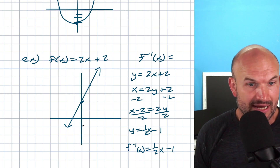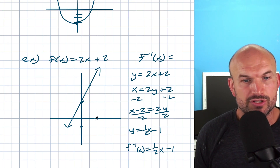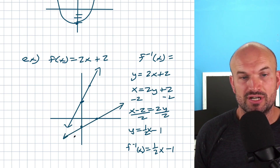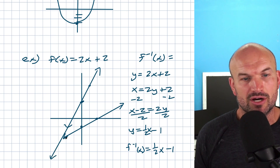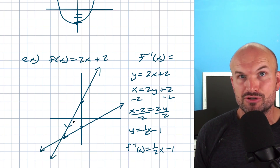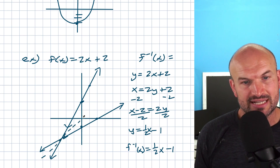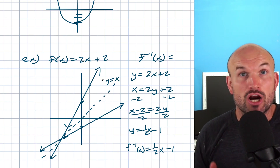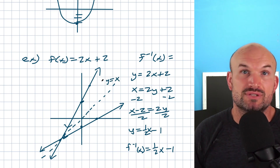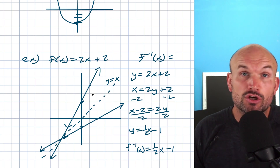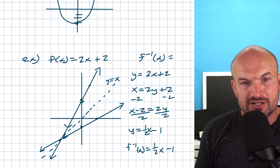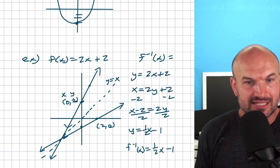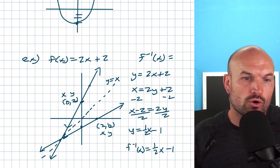If I graph f⁻¹(x), it has a y-intercept of negative 1 and slope of 1/2. You might not immediately see the relationship, but if you extend both lines, there's symmetry — a dashed line going right between the two functions. That dashed line is y = x. Any function and its inverse are symmetrical; they're flipped about the y = x line. Also notice the coordinate points are swapped: the original function has the point (0, 2), and the inverse has the point (2, 0).